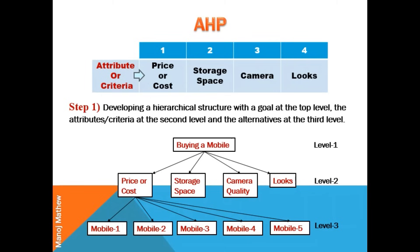The first and foremost step in AHP is creating the hierarchical structure, in which the goal is kept in the first level. In this example, the goal is to buy the best mobile phone. Criteria is kept in the second level and alternatives in level three. Each alternative has its own value of criteria — for example, each mobile phone will have its own price or cost associated with it.